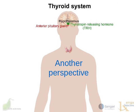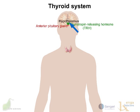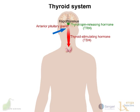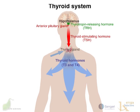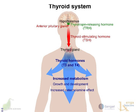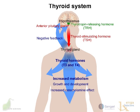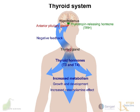Now, let's look at this from another perspective. The hypothalamus produces thyrotropin-releasing hormone, TRH, which acts on the anterior or front part of the pituitary gland. The pituitary gland produces thyroid-stimulating hormone, TSH, which then acts on the thyroid gland. The thyroid gland then produces the thyroid hormones T3 and T4, which are released into the body, where they increase the metabolism and affect growth and development. A negative feedback loop is present in that, as the levels of T4 and T3 increase, a signal is sent to the pituitary gland and the hypothalamus, causing levels of TSH to be reduced, thus reducing the production of TSH and keeping the levels in check.